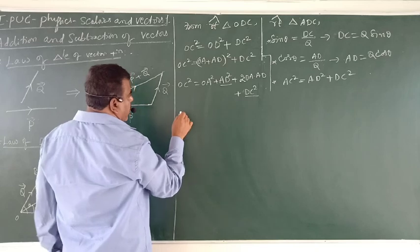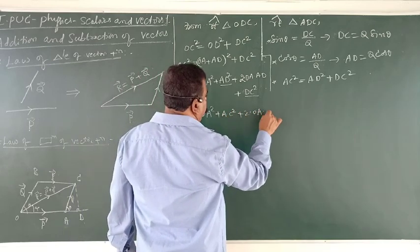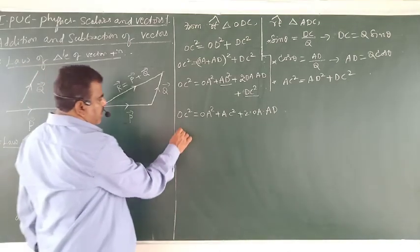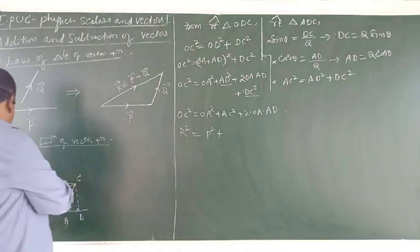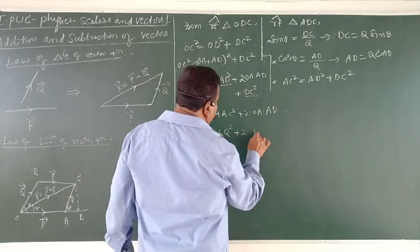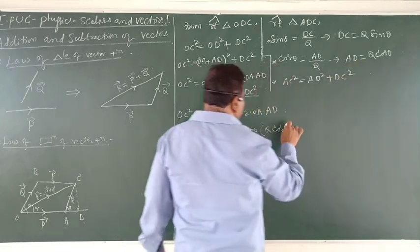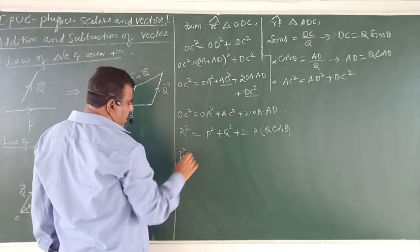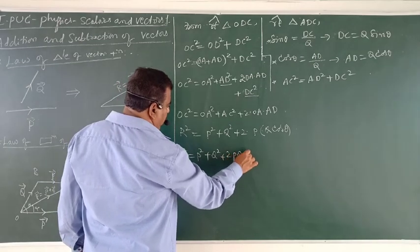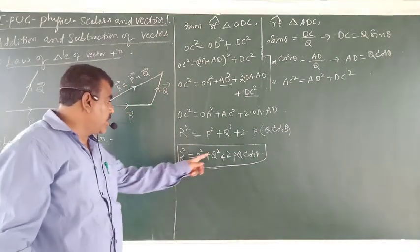From the figure, OC² = OA² + AC² + 2·OA·AD. Since OA is P, AC is OB which is Q, and AD is Q·cosθ, substituting these gives: R² = P² + Q² + 2PQ·cosθ. This expression gives the magnitude of the resultant of two vectors P and Q.